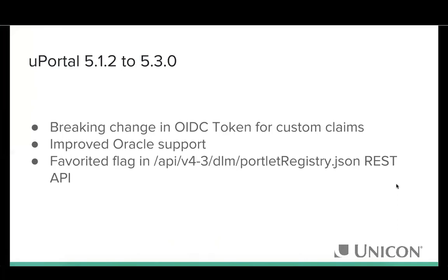Key highlights beyond template user removal: there was a breaking change to the OIDC token for custom claims — not many people are using this yet, but if you are, check the release notes. Oracle support had fallen behind but has been restored thanks to Docker. The 'favorited' flag was also added to the portlet registry.